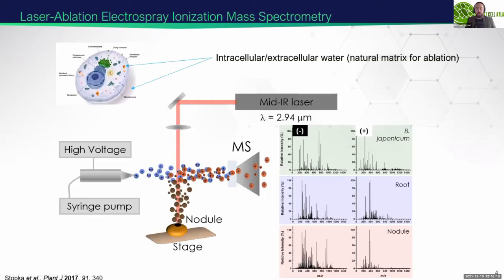The instrument I've been developing is a laser ablation electrospray ionization mass spec imaging system. The key thing here is we use a laser set to the OH absorption band of water, which is 2940 nanometers, and then we can use the native water within tissues to ablate molecules — metabolites. These molecules are ejected as neutrals, and then they're ionized in the electrospray and directed into the mass spec. We can look at tissues and cells in their native state with no artificial additives required. This makes LAESI a really powerful in-situ ambient spatial metabolomics technique.